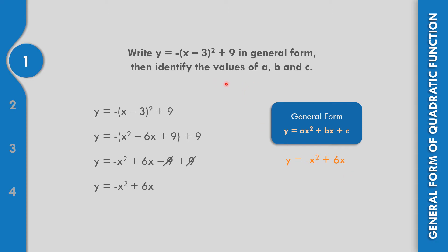Now we identify the values of a, b, and c. The value of a, the numerical coefficient of x squared, is negative 1. The value of b, the numerical coefficient of x, is 6. And c, the constant, is equal to 0.